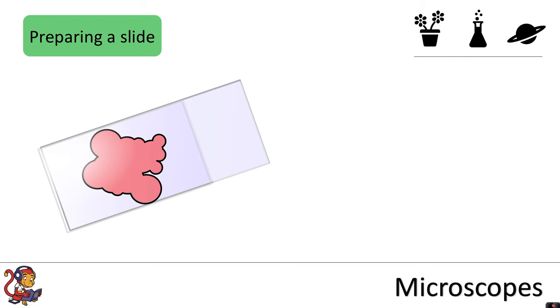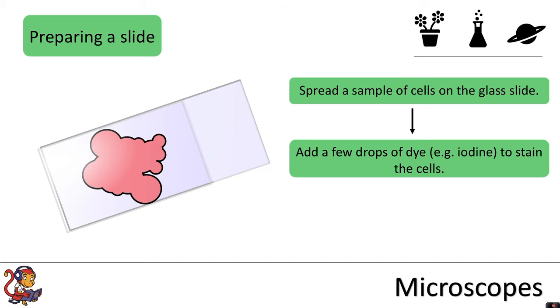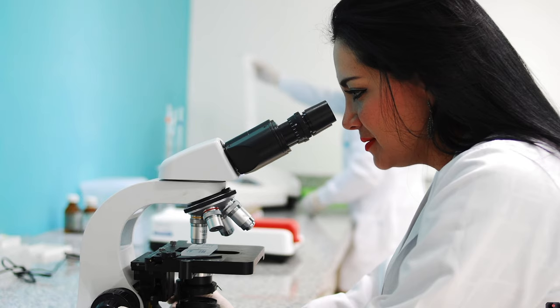If we wanted to look at some cells under the microscope for example we would spread a small sample of cells on the glass slide. We would add a few drops of dye for example iodine to stain the cells and then we would place a cover slip on top. Now we're ready to view them under the microscope.